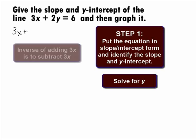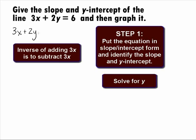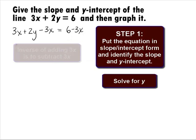Let's move that 3x to the other side by doing the inverse operation of subtracting both sides by 3x. That gives us 3x plus 2y minus 3x equals 6 minus 3x. That simplifies to be 2y equals negative 3x plus 6.